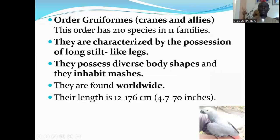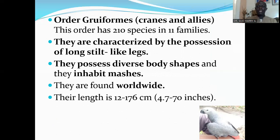The next order is Order Gruiformes, which has cranes and rails. The order has 210 species in 11 families. They are characterized by the possession of long, stilt-like legs. They possess diverse body shapes and inhabit marshes. They are found worldwide. Their length is 12 to 176 centimeters.